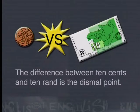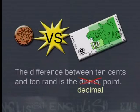Now see if you can spot the Malapropism in the next sentence: 'The difference between 10 cents and 10 rand is the dismal point.' If you spotted that the word 'dismal' was used out of context here, you are 100% right. Surely, the sentence should read 'decimal point.' If you can spot these kinds of mistakes or Malapropisms, they are usually quite funny. Just make sure that you don't make them.